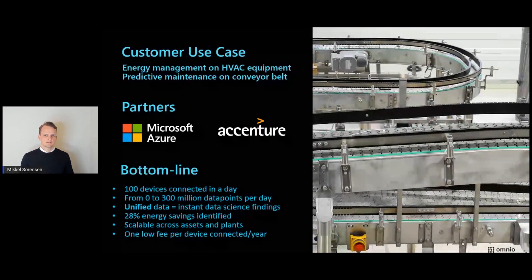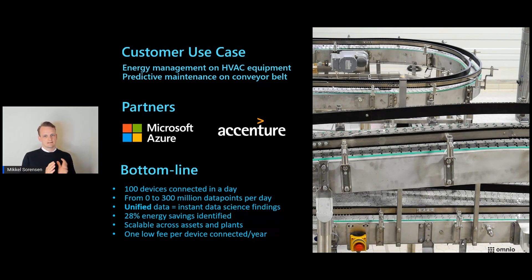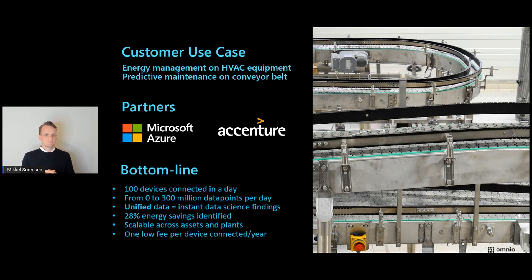Can you share a customer story? We did a case with a customer that needed to monitor both their production lines and their HVAC equipment in the factory. The goal was to do both energy management and predictive maintenance — a tall order with a lot of devices in the mix. We deployed Omnio Edge during the lunch break on the production floor, and they went from 0 to 300 million data points per day in 30 minutes. We streamed the data directly into IoT Hub, and because the data was all unified, they could immediately start finding improvements across production despite their fairly complex device mix.